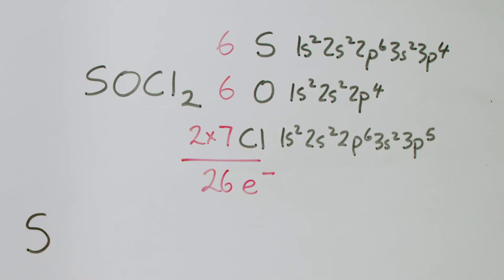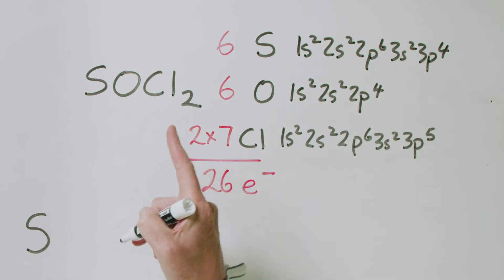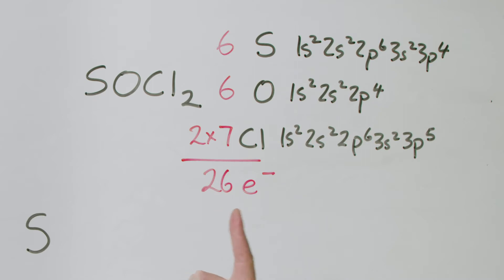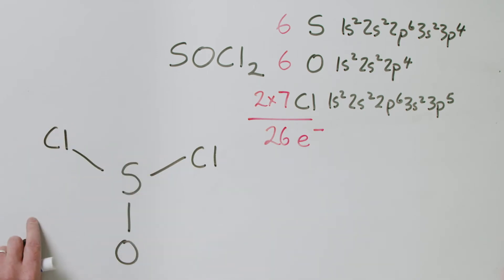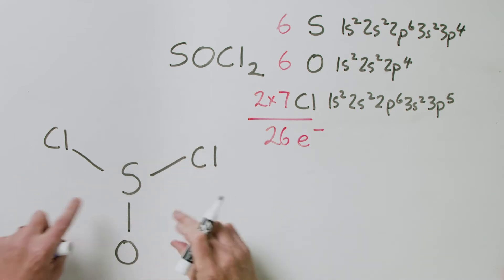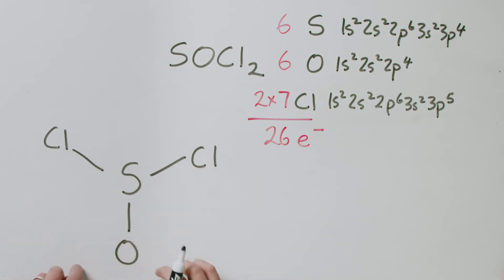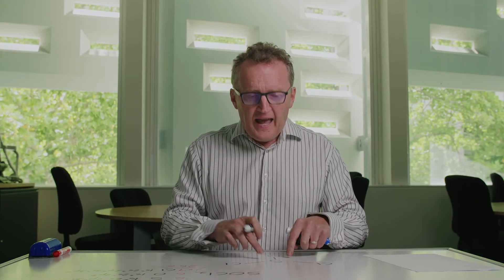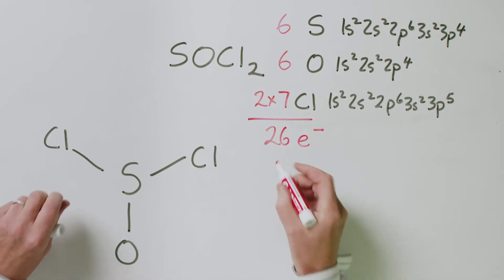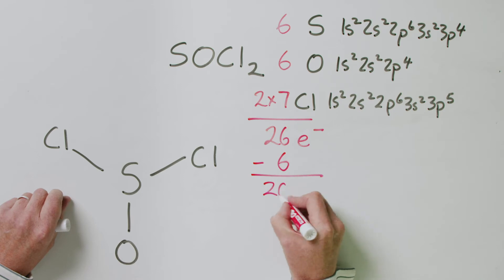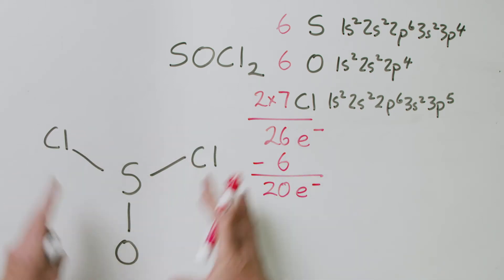So where do we begin? The first step is to write out what we call the sigma framework using single bonds. We place the central sulfur bonded to an oxygen and two chlorines. In drawing those three single bonds we've used six electrons, which leaves us 20 electrons to make up the rest of the molecule.